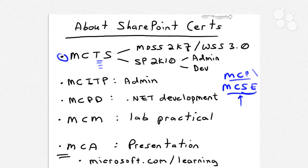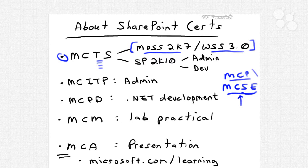With respect to the previous major version of SharePoint — Microsoft Office SharePoint Server 2007, hereafter referred to as MOSS 2007 — and the free analog or foundation of MOSS, Windows SharePoint Services 3.0, the certification options there were limited and actually terminated at the MCTS level. You could earn an MCTS in MOSS and/or WSS3 administration, or MOSS 2007/WSS3 application development. And that was it.